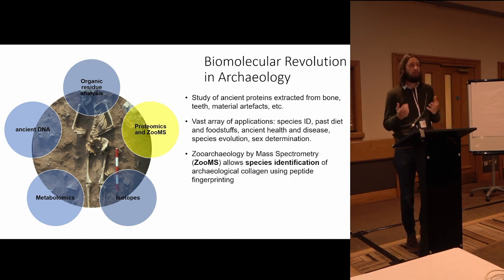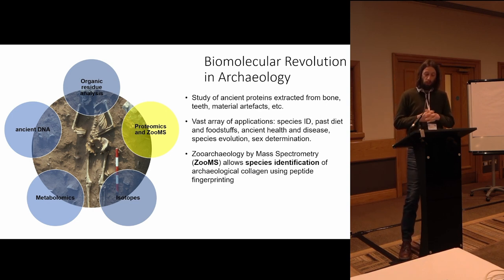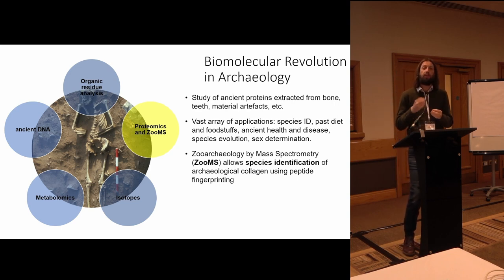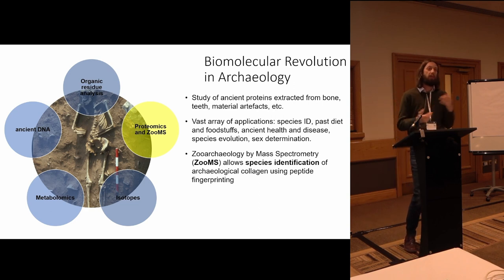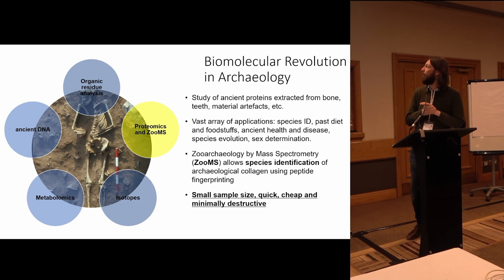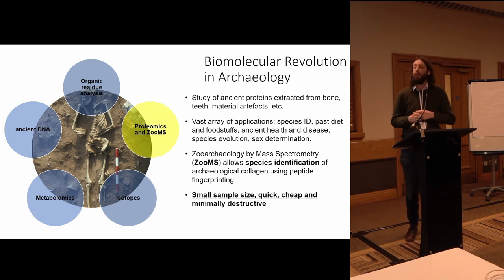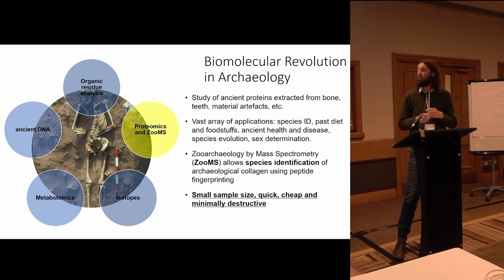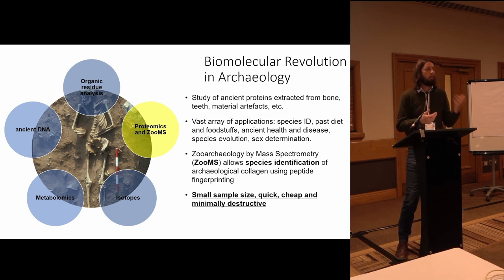One of the probably most common methods you've heard about is ZooMS — zooarchaeology by mass spectrometry — and that allows us to do species identification of bone, in particular when you've got small fragments that cannot be identified by zooarchaeologists. The key takeaway is that we use a small sample size, it's relatively quick, it's very cheap, and it's almost non-destructive — you can't see the impact on the naked eye; you need a microscope to see where the sample was taken.